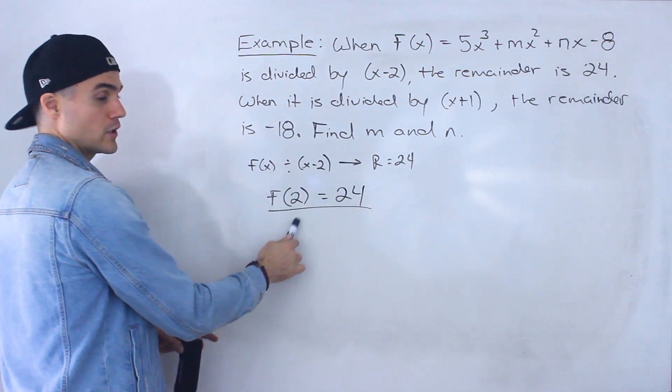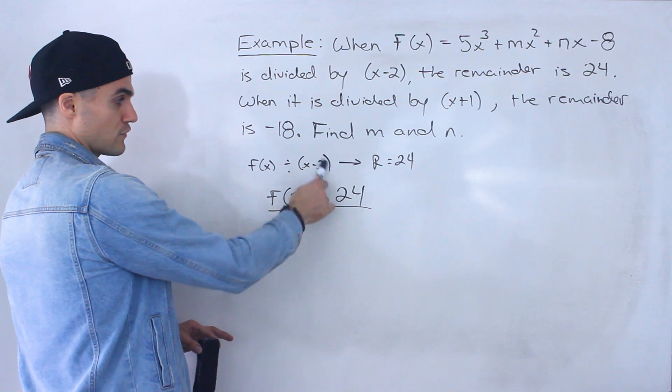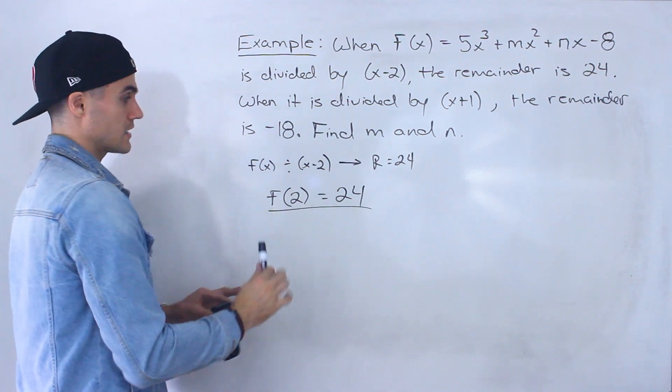From that statement, we know this holds with the remainder theorem. f of that k value, which is positive 2. You switch the signs.